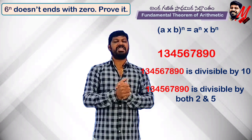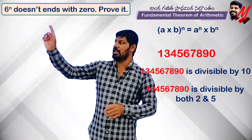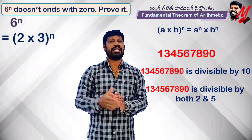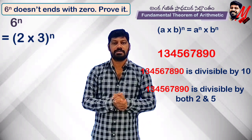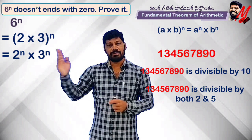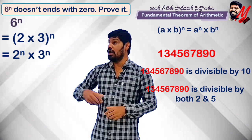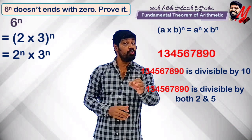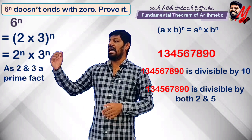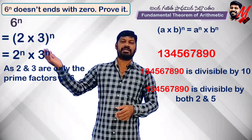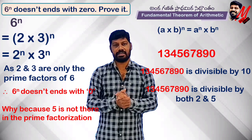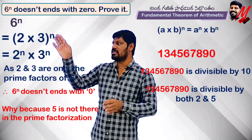6 power n does not end with 0. It is simple. 6 power n does not end with 0 because the prime factors of 6 are 2 into 3. So 6 power n equals (2 into 3) whole power n. By the index property, this equals 2 power n into 3 power n. The prime factors are only 2 and 3. As 2 and 3 are the only prime factors of 6, and 5 is not there in the prime factorization, 6 power n does not end with 0. Because 5 is not there in the prime factorization — that is the simple proof and you can get a systematic answer.